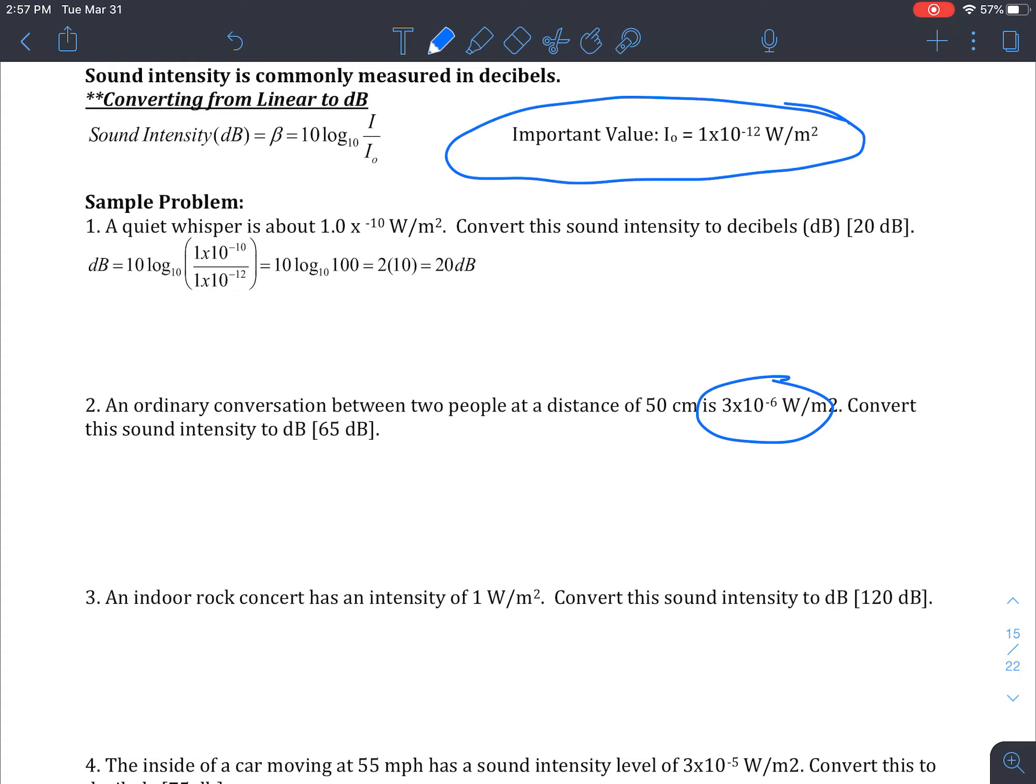Now we have to compare it to this important value, 1 times 10 to the negative 12 watts per meter squared. This is the lowest that we as humans can hear. So we have to relate it to that because there is sound or vibrations less than frequencies and magnitudes that we can hear. But we can't perceive that on our scale because we perceive vibrations as sound, and then this is a sound scale. So to do this, we're simply going to convert it from that log.